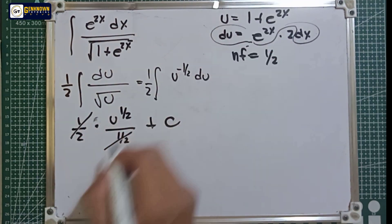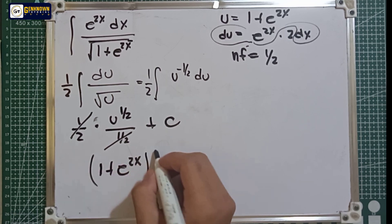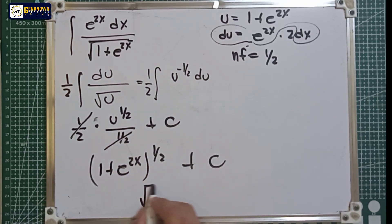So direct sub, 1 plus e raised to 2x raised to 1 over 2 plus the constant. Or square root of 1 plus e raised to 2x plus the constant ang final answer.